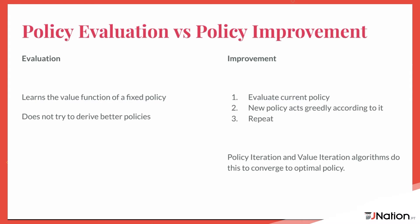An important distinction between classes of RL algorithms is policy evaluation versus policy improvement. In policy evaluation, you have a fixed policy and just want to learn the value function — either the state value function or the action value function — without attempting to improve the policy. Policy improvement goes beyond that: there is often an intermediate step of policy evaluation, but then you act greedily according to the estimated value function. If I realize that taking a different action than what my policy recommends would be even better, I update. There is often this loop of evaluating the current policy, acting greedily, evaluating again, and repeating — leading to better and better policies.